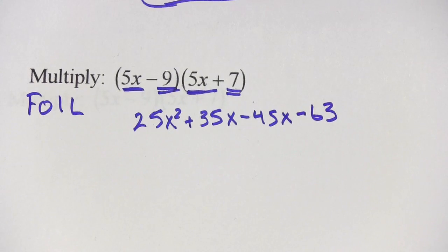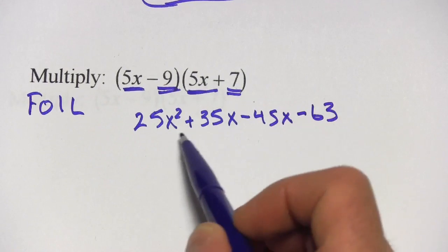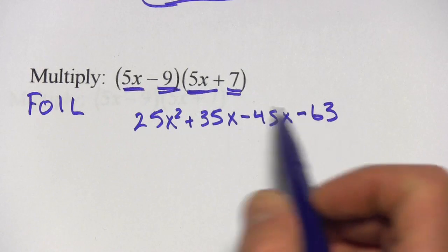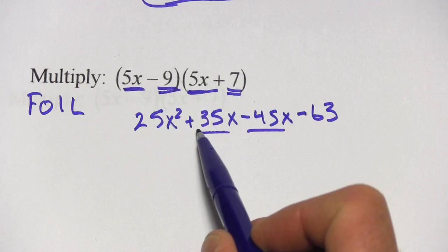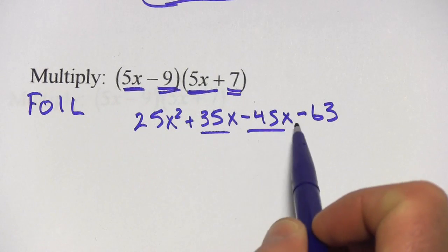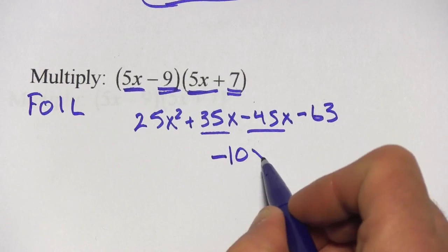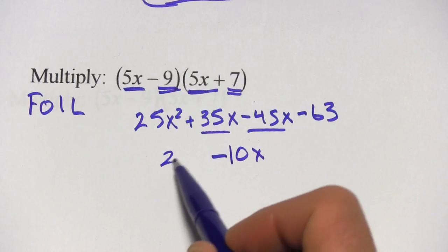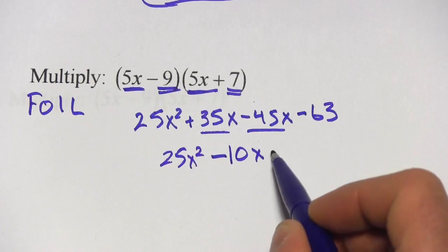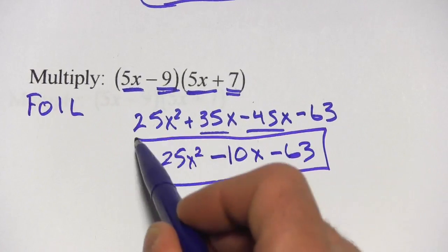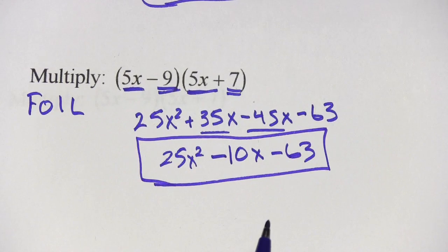Now we just have to combine the like terms. We have an x squared term, we have just a plain old number term, and we have two x terms. A positive 35x and a negative 45x. When you put those together, you get a negative 10x. And we have our 25x squared and our negative 63. And that is our answer. So that's a little bit of work in multiplying polynomials.